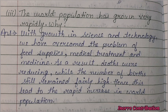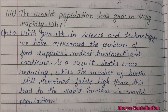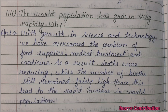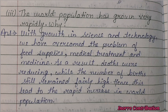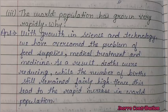Next question: the world population has grown very rapidly. Why? With the growth in science and technology we have overcome the problem of food supplies, medical treatment and medicine. As a result, deaths were reducing while the number of births still remained fairly high. Hence this led to the rapid increase in world population.